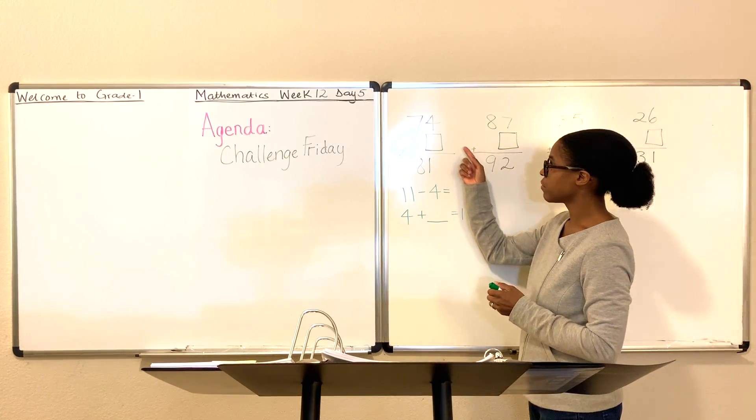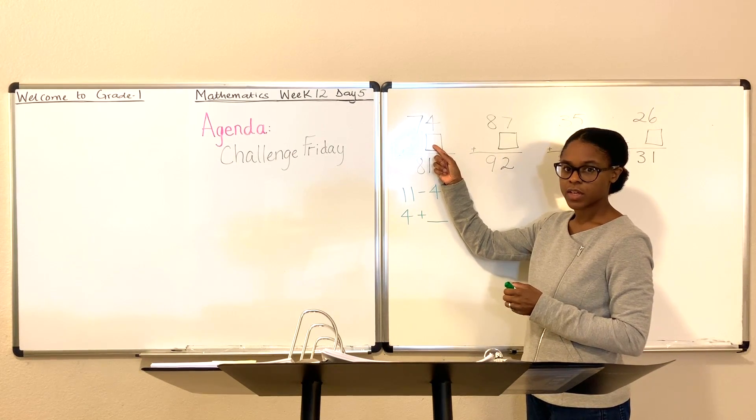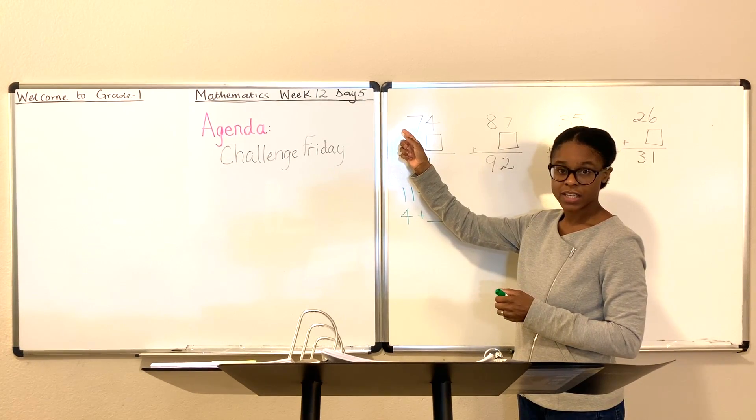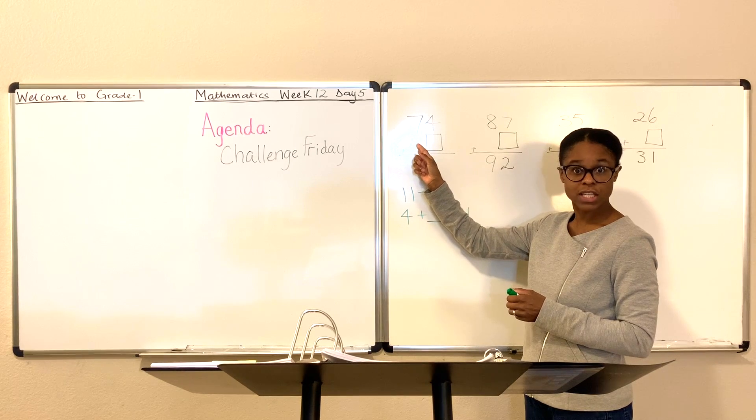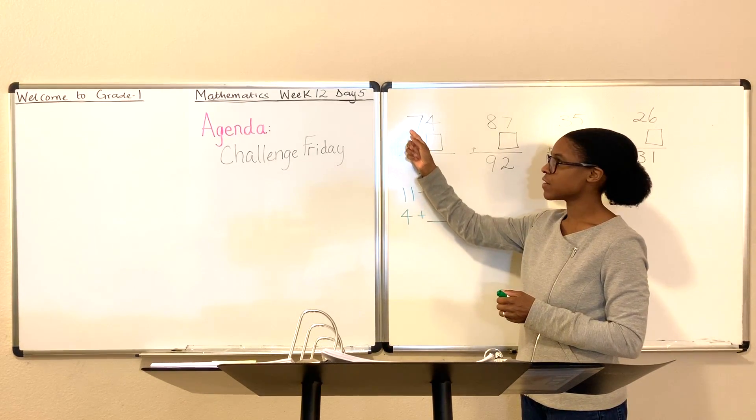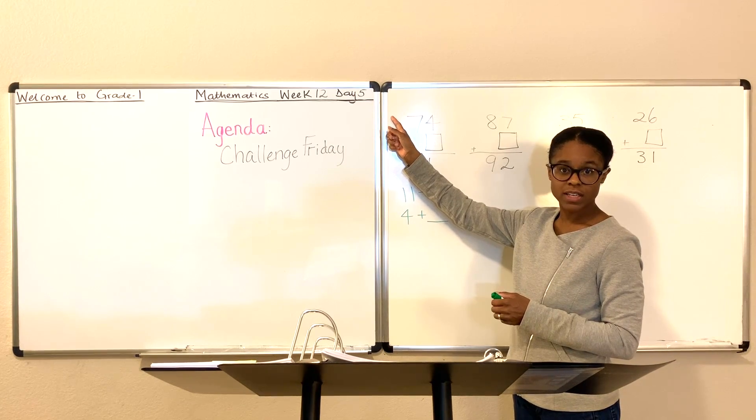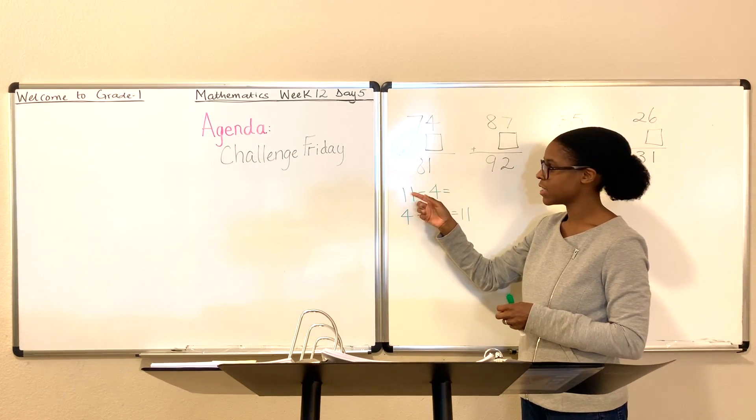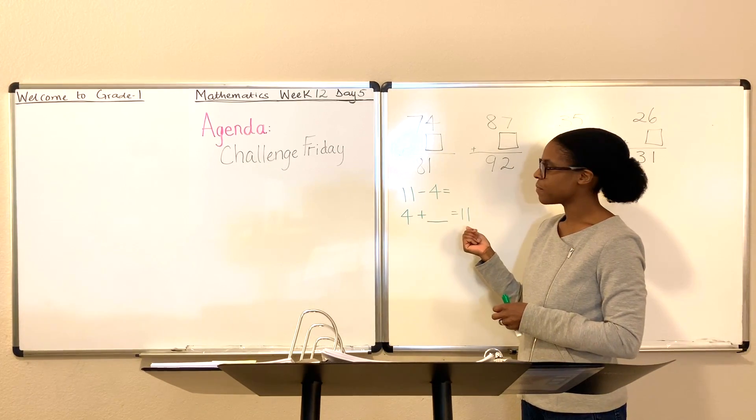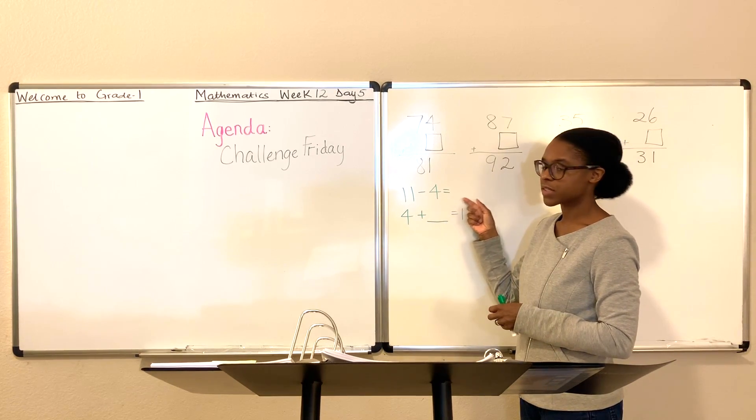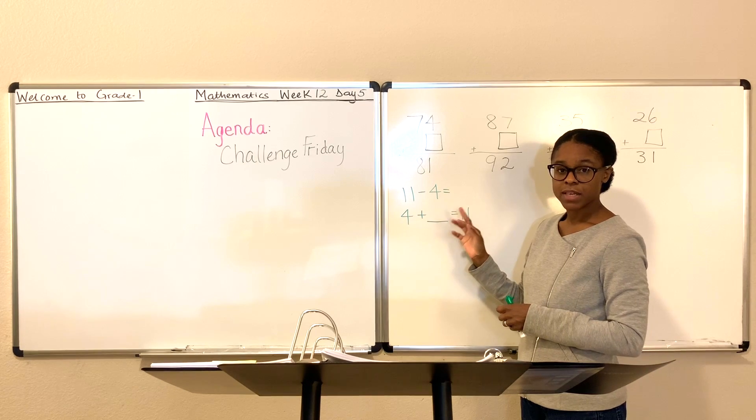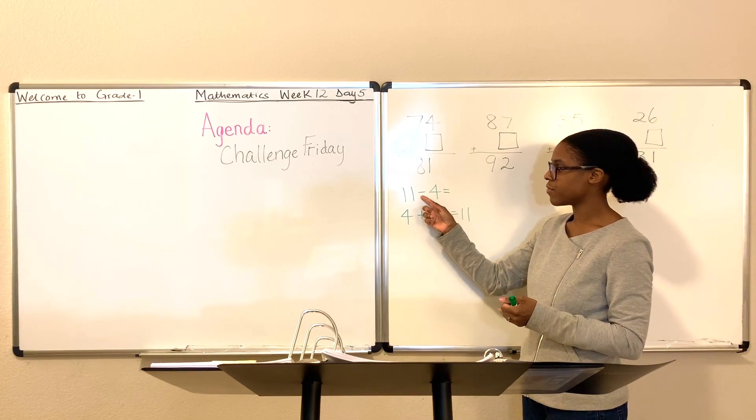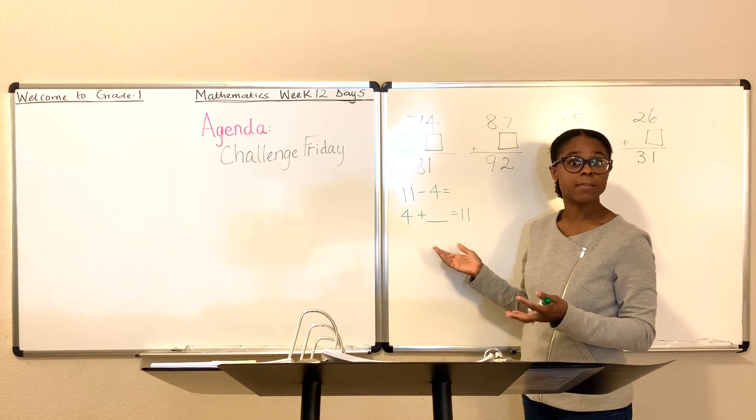And then you have a 4. So the number that you're trying to find, the missing digit you're trying to find, you can easily find it if you just say 11 minus 4. And that'll get you the missing digit. Another thing you could do is say 4 plus what number is going to equal 11. Both of those are perfectly okay. The most important thing is to recognize that to solve a problem, you need at least two values. The first value is here, 4. But we don't know this value. We do know, however, that this is 11.